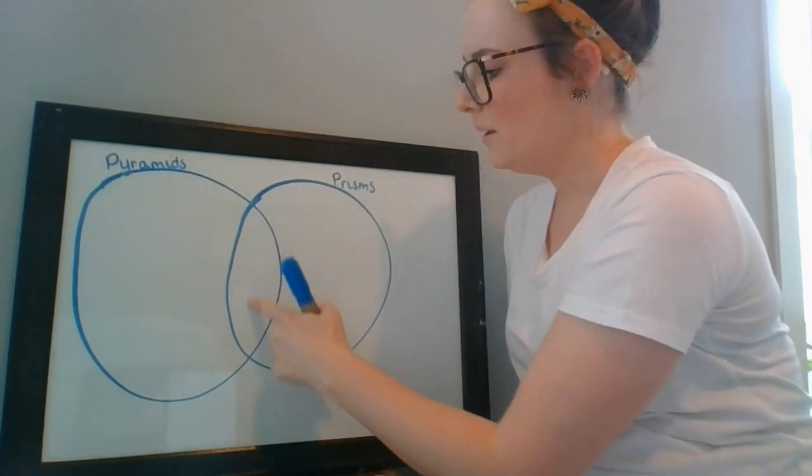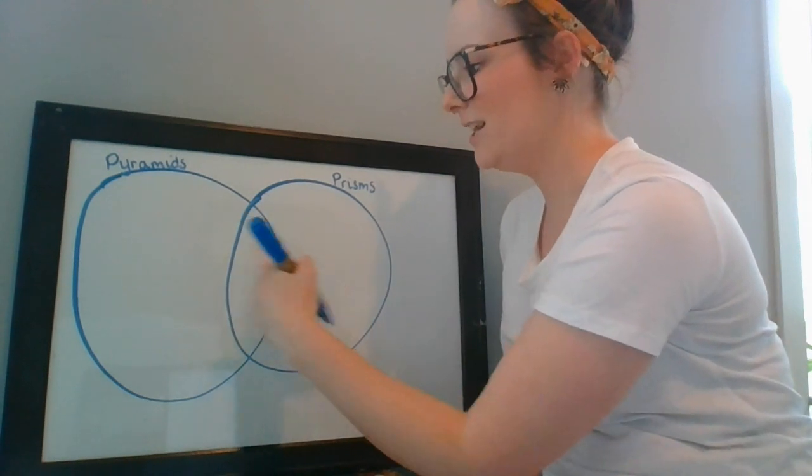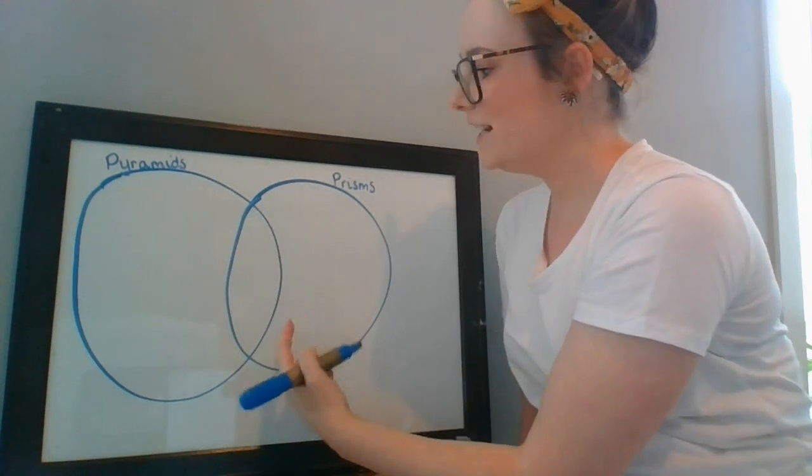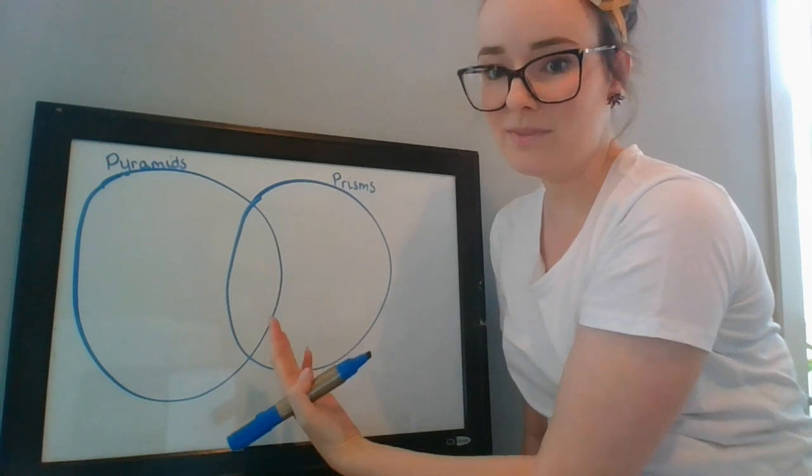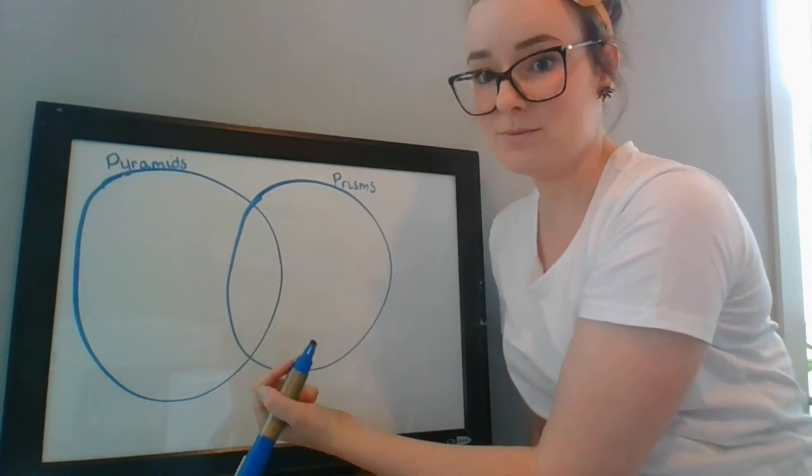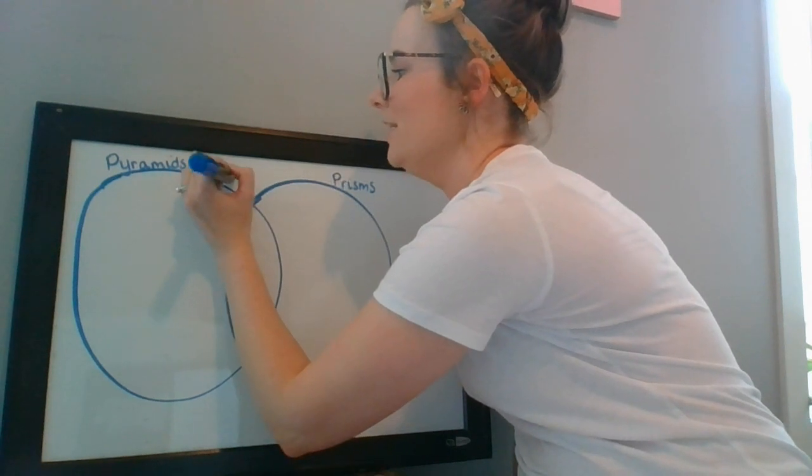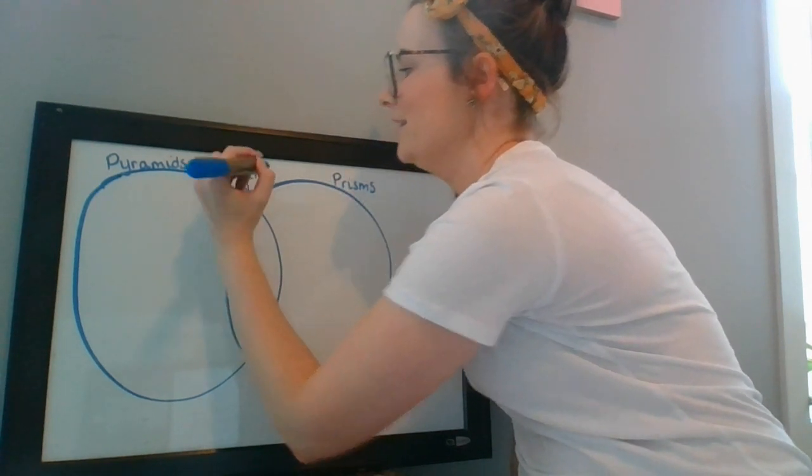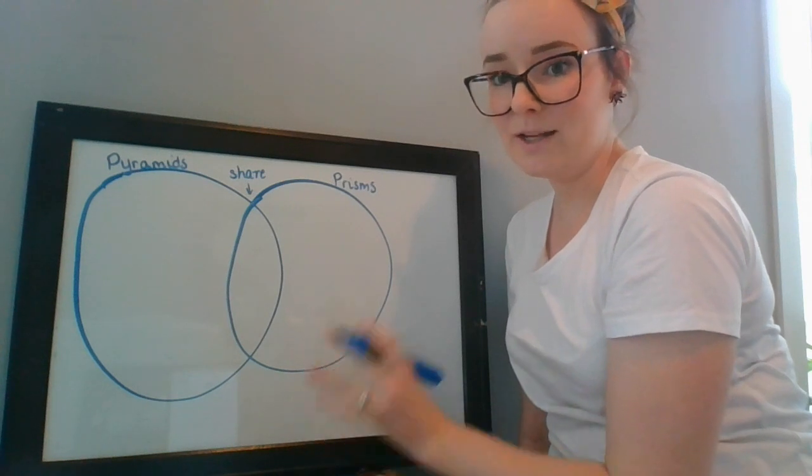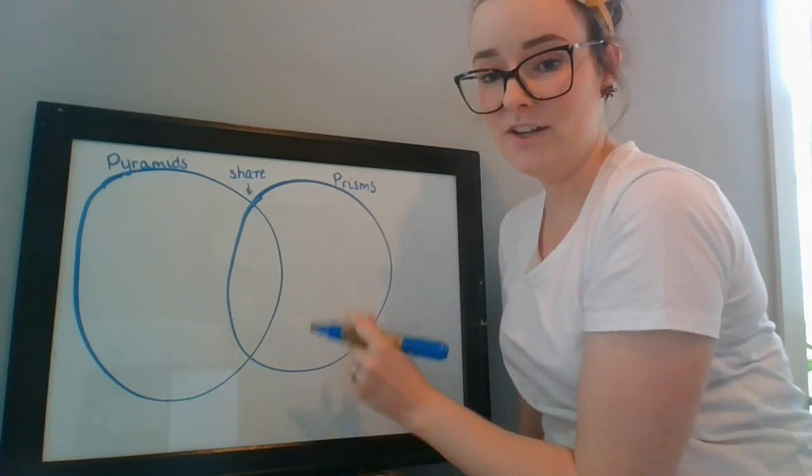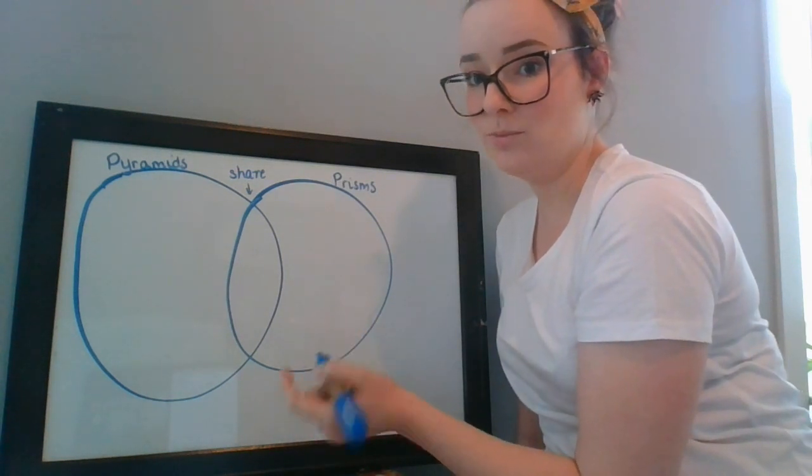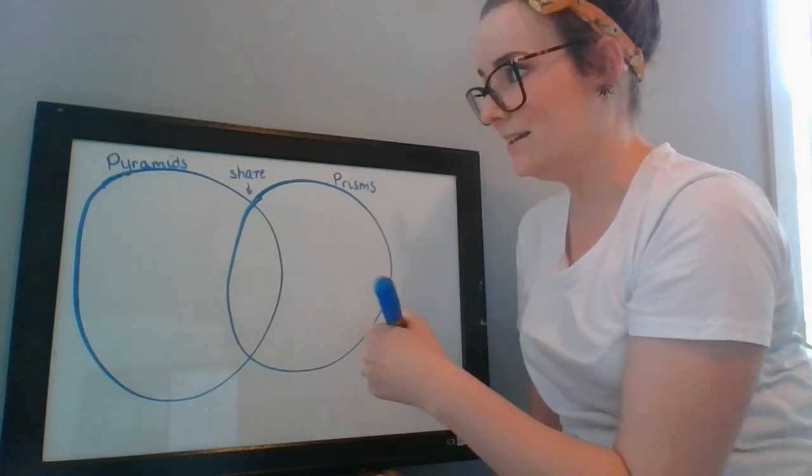Now the bit in the middle here is where they share, so that's telling me that there must be something that pyramids and prisms share. So I might just draw like a little arrow just to remind me and I'm going to write share in the middle. You can pause at any time so if you want to draw your Venn diagram as we go you're more than welcome, otherwise you can just do it all at the end.